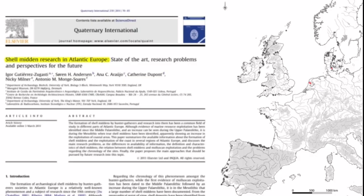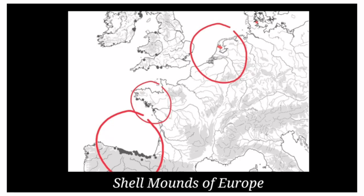For more information on the map of shell middens or mounds of Europe, you can research the Quaternary International Journal and the article 'Shell Middens Research in Atlantic Europe: State-of-the-Art, Research Problems and Perspectives for the Future.' On this map, I highlighted three red circles where some of these middens were located in Europe.